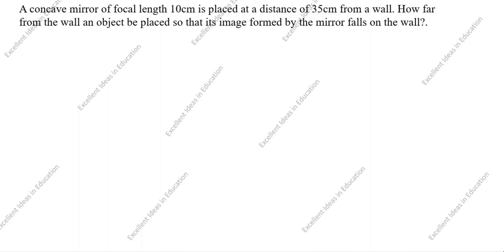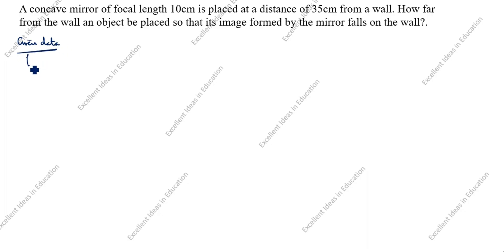Hi friends, welcome to my channel 'Excellent Ideas in Education'. Today we are going to solve this light chapter problem. This is a very important problem: a concave mirror of focal length 10 centimeter — concave mirror means focal length is negative — so focal length is negative 10 centimeter. It is placed at a distance of 35 centimeter from a wall.